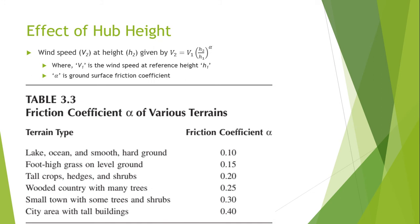The wind speed V2 at a certain height h2 is given by the formula V2 equals V1 times the second height divided by first height raised to the power alpha, where V1 is the wind speed at reference height h1 and alpha is the ground surface friction coefficient. Taller wind turbines also provide additional clearance needed for longer blades, thus increasing energy capture capacity.